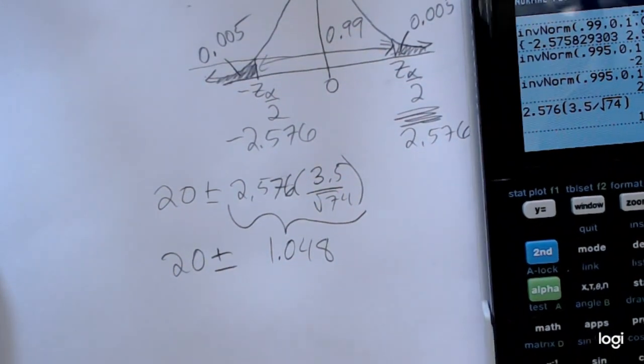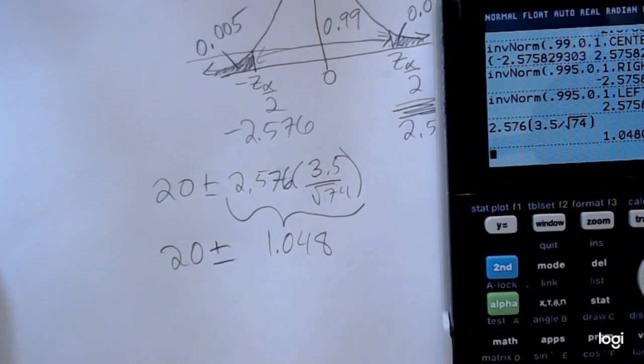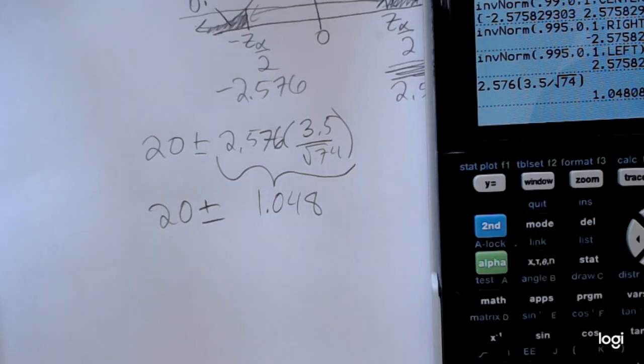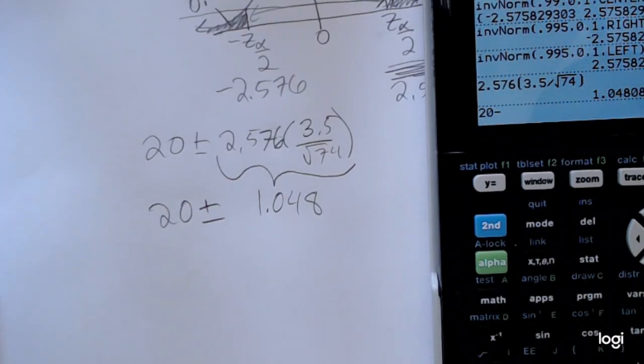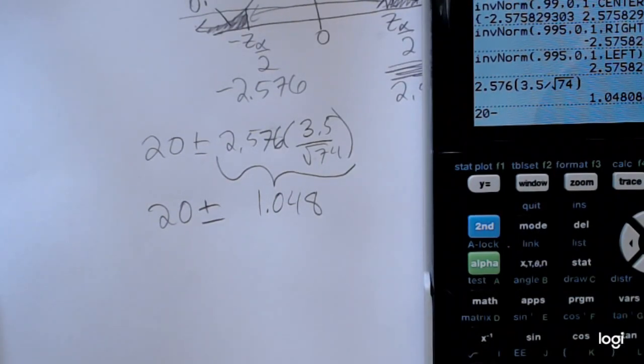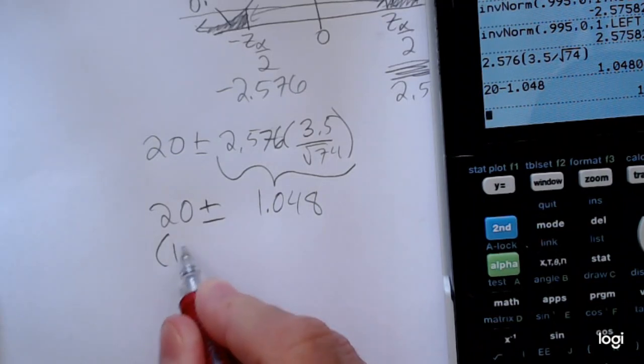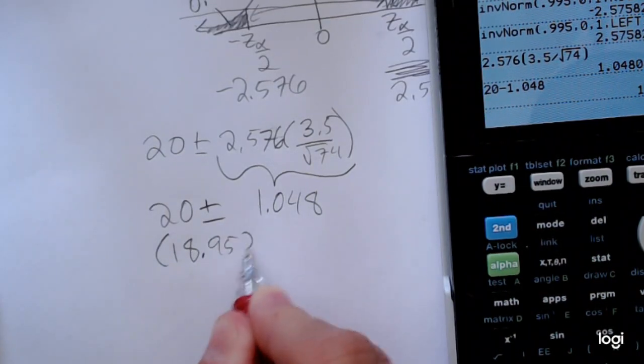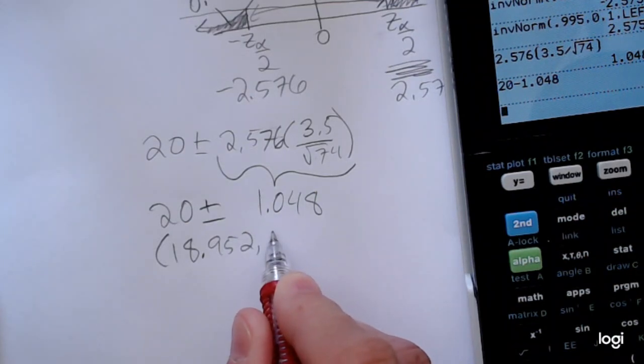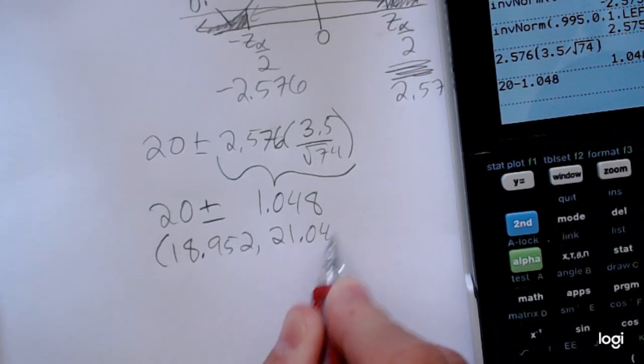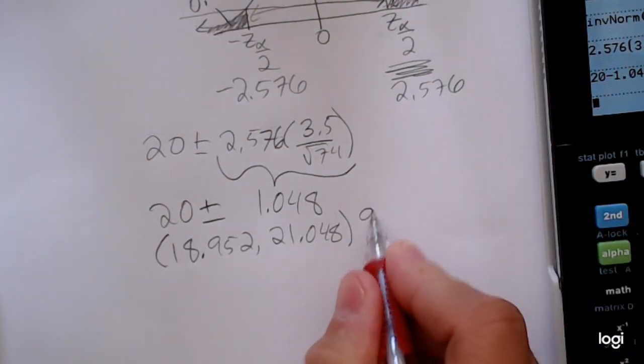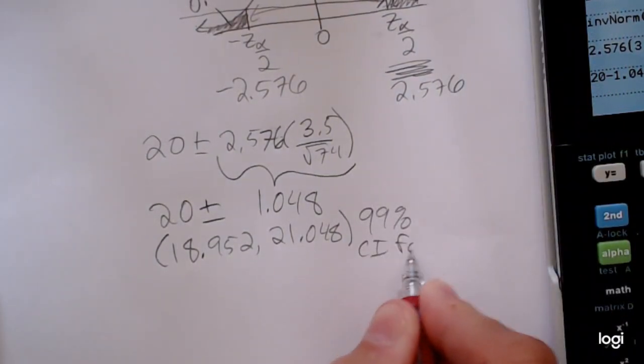So my final answer might be slightly off from what I need to input into the homework system that I'm using. So I will go back and show you how to get the confidence interval directly from the calculator. So I want to subtract that margin of error to get the lower end point. So that lower end point will be 18.952, and then the upper end point will be 21.048. And that's going to be a 99% confidence interval for mu.